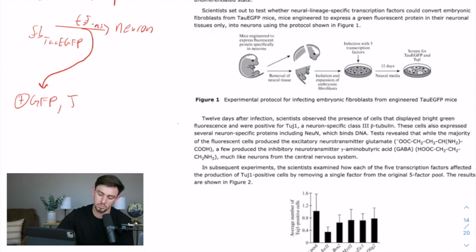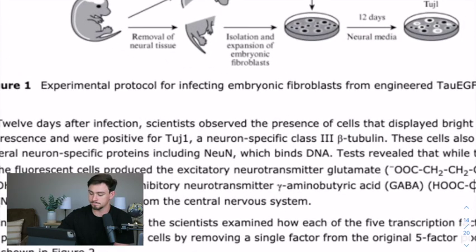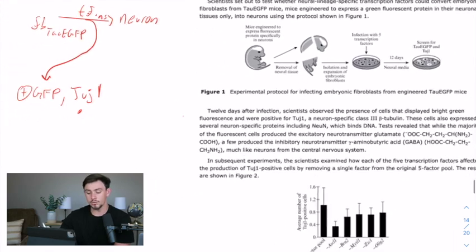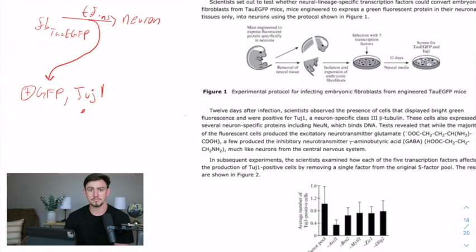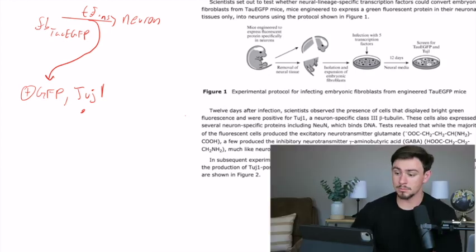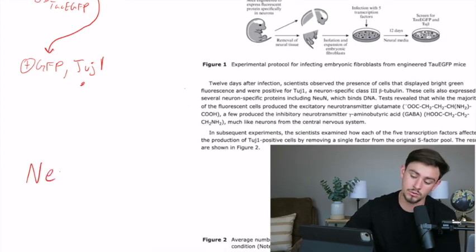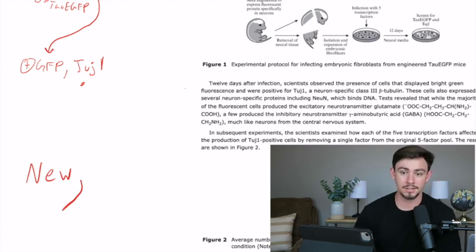And they're also positive for TOOGE 1. TOOGE 1. So what is TOOGE 1? Because I don't remember that from my undergraduate course. It actually tells you. TOOGE 1 is a neuron-specific class 3 beta tubulin. Okay. So something that's really, really important and helpful on the MCAT—and this gets into a strategy that's a little bit more advanced that I call foreshadowing—but I'm going to go ahead and introduce it now because this passage is so good for it.